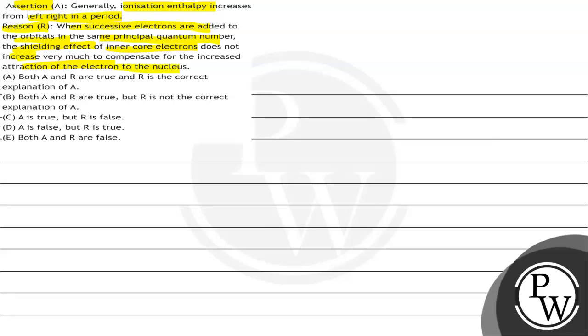Corresponding to this are four options in which you have to tell whether A is true or R is false, and if both the statements are true, then whether R is the correct explanation of A or not.